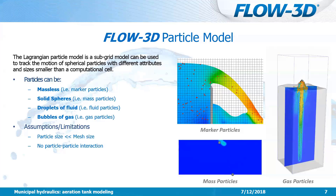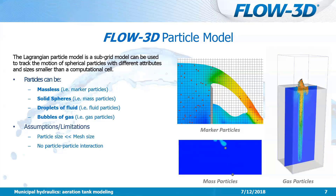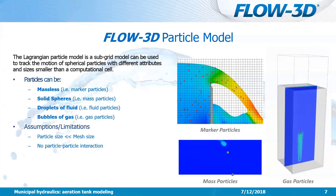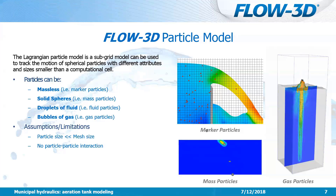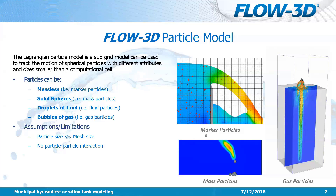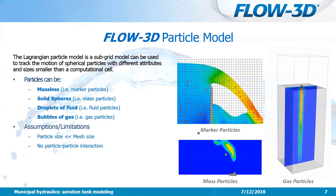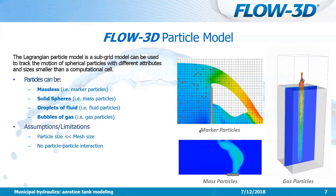In today's example setup, we're going to use gas particles to simulate the air diffuser. We'll also add marker particles to visualize the mixing of the fluid within the tank. When using the particle model, it's important to emphasize that the particles are assumed to be much smaller than the mesh — probably somewhere within the range of 5 to 10% or even less of the mesh dimensions. This is because we assume that the particles do not displace fluid. Therefore, if the particle size is large relative to the mesh, we won't correctly represent the physics of fluid moving around a large individual particle. We also assume there's no particle-particle interaction, so it's best to avoid situations of very high particle concentrations.